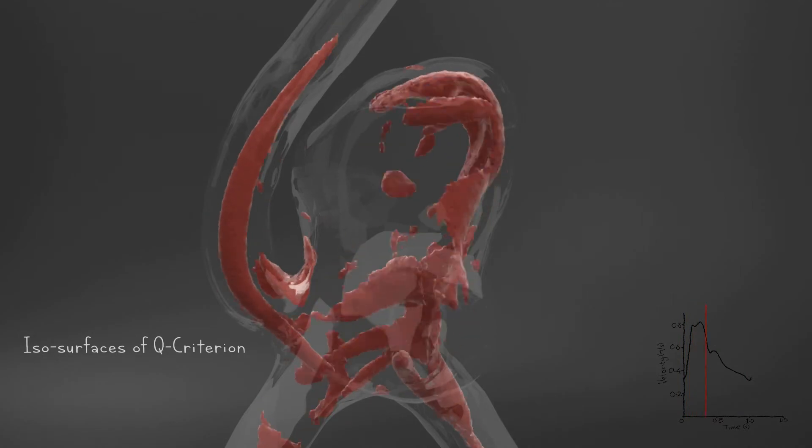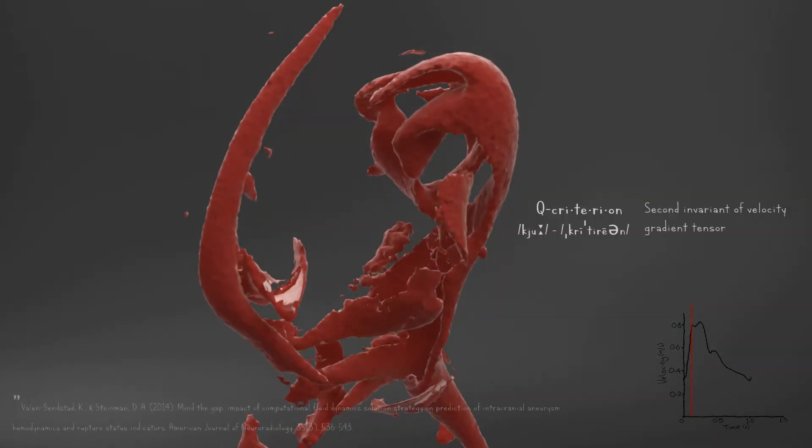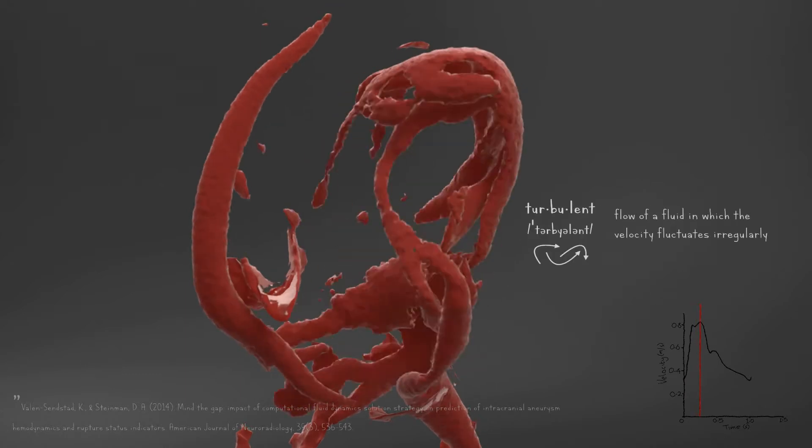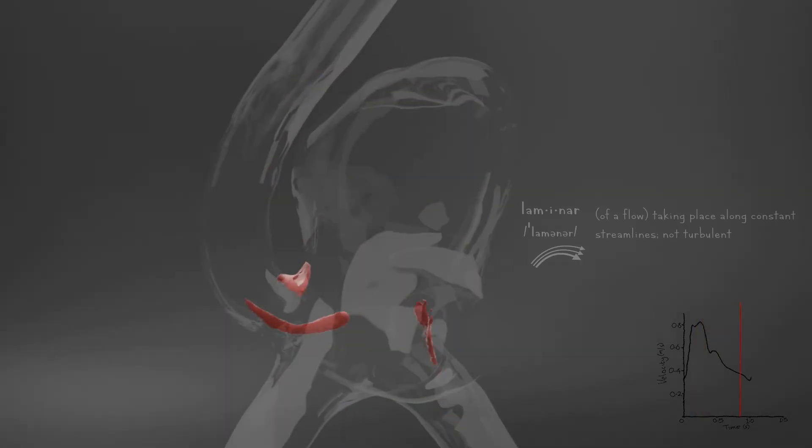Blood flow in brain aneurysms is much more complex than previously thought, often demonstrating turbulent-like qualities where simple laminar flows were thought to dominate.